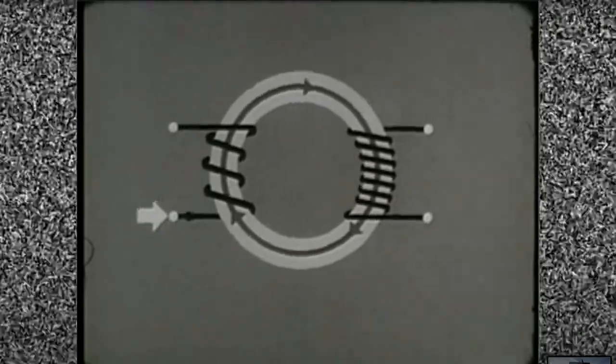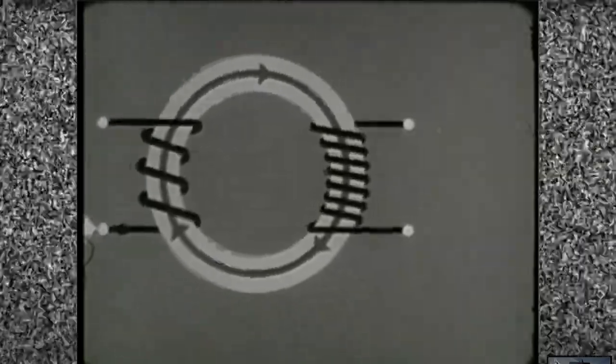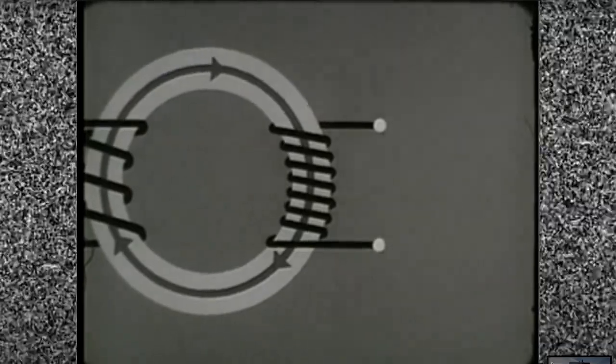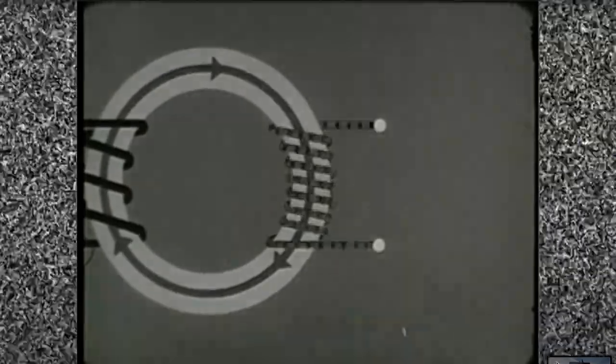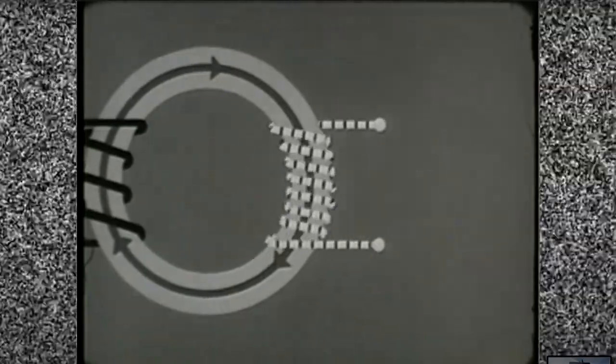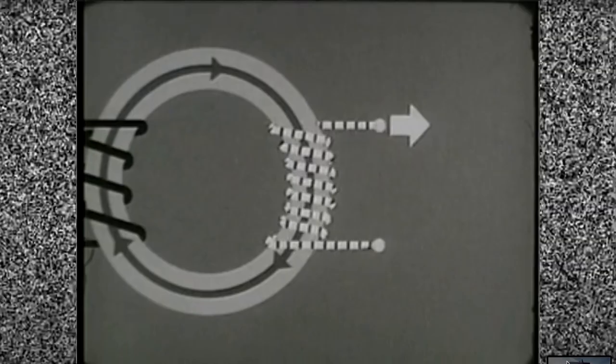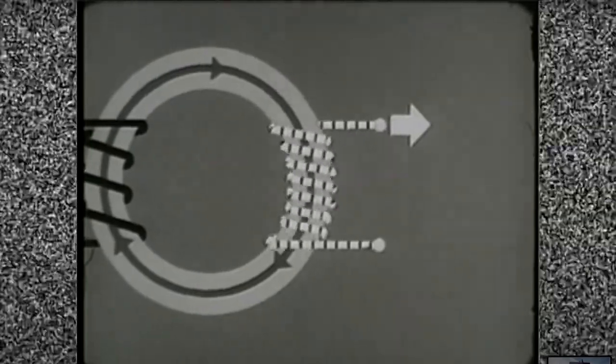Any time a magnetic field builds up or collapses across a conductor like this winding, the movement of the lines of force induces a voltage in the winding, and current flows.